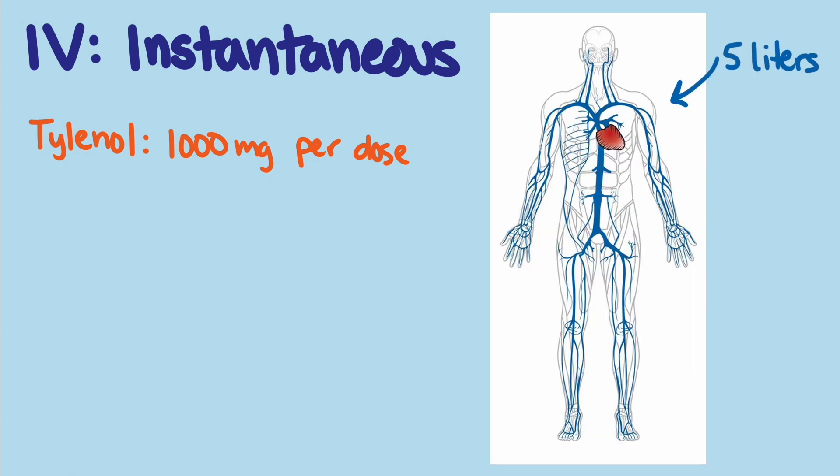A typical adult has about 5 liters of blood, so after all the medication is in the blood, concentration is 1,000 mg in 5 liters, or 200 mg per liter.